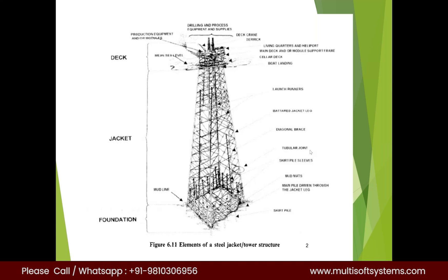In jackets, you will mostly be using tubular structures. When there is a joint between tubulars, you typically have T joints, K joints, or Y joints. The punching shear that can be allowed and all these values are mentioned in the API code. All joints must be designated as tubular joints, and specific design will be done for each one.